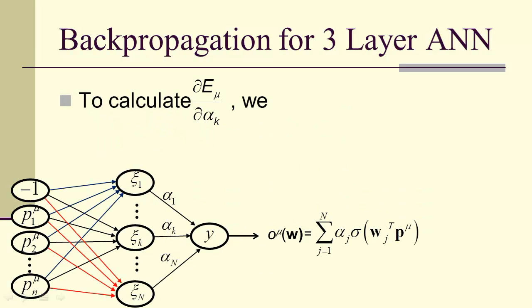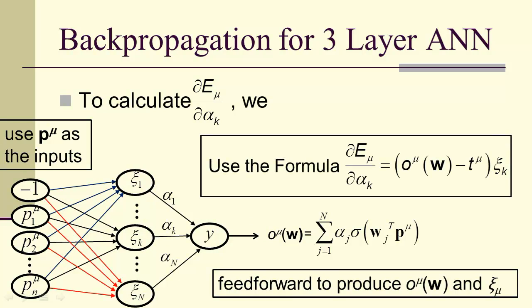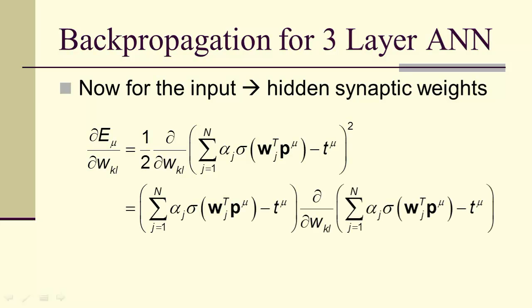That means to calculate the partial of E sub mu with respect to alpha sub k, we first use P sub mu as the inputs. Then we feed forward until we get an output, O sub mu of W. And then we use this formula that we derived on the last slide. So now let's look at going from the input to the hidden. Those are the W's. So we're going to take the derivative with respect to W sub kL. And once again, we use the chain rule.